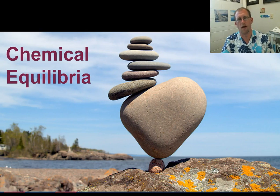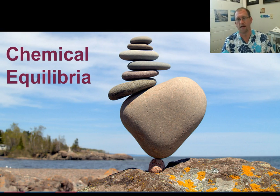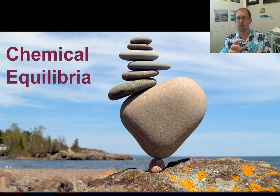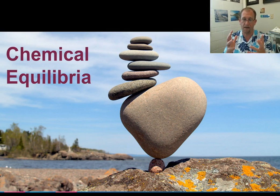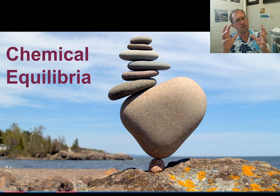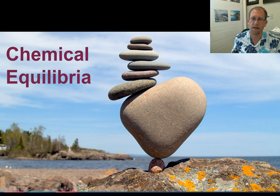Ready for another flipped lecture? We talked about rate laws as mathematical expressions of how quickly a reaction progresses from reactants to products, but now we're going to complicate the issue a little bit because most reactions stop somewhere before the reaction is all the way done. The reaction starts to undo itself a little bit, and we'll talk about how that works. The reaction going forward and a reaction going backward can reach this point of balance. We're talking about chemical equilibrium.